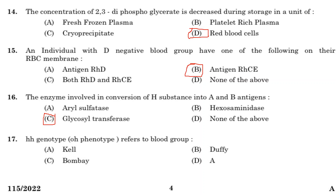Seventeenth question: HH genotype, that is Oh phenotype, refers to which blood group. Option A: Kell. Option B: Duffy. Option C: Bombay. Option D: A. Answer is Option C, Bombay.